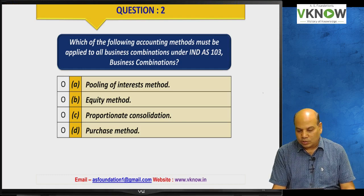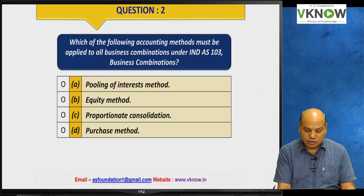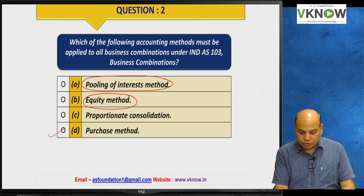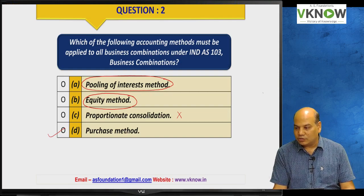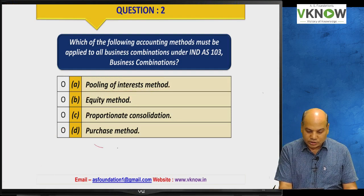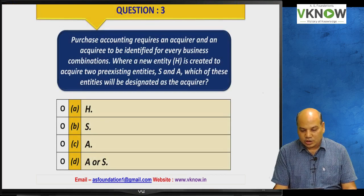Question number two: Which of the following accounting methods must be applied to all business combinations under Ind AS 103 — purchase method, proportionate consolidation, equity method, or pooling of interest method? The answer is the purchase method. The pooling of interest method applies only for common control transactions, the equity method for associates and joint ventures, and proportionate consolidation is applied only for joint operations. So the correct answer is D — purchase method.